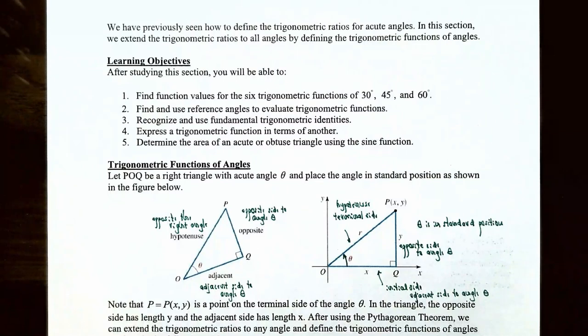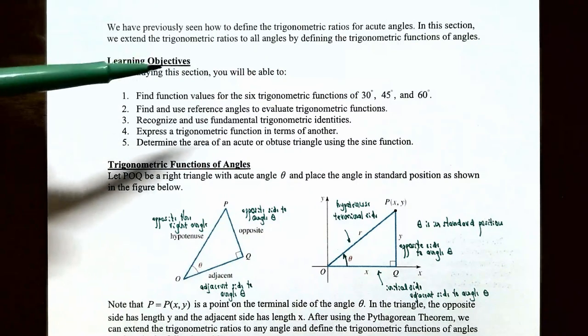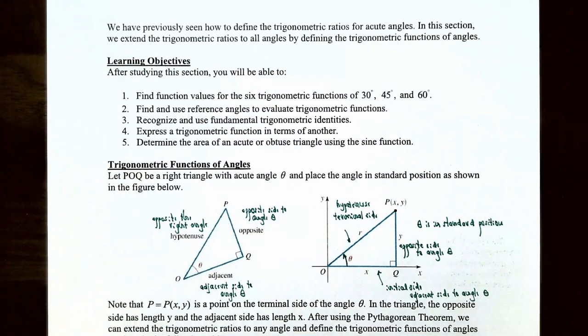In the previous video we talked about how to find the function values for the six trigonometric functions of 30 degrees, 45 degrees, and 60 degrees, and also their equivalent in terms of radian measure, which will be pi over 6 radians, pi over 4 radians, and pi over 3 radians.